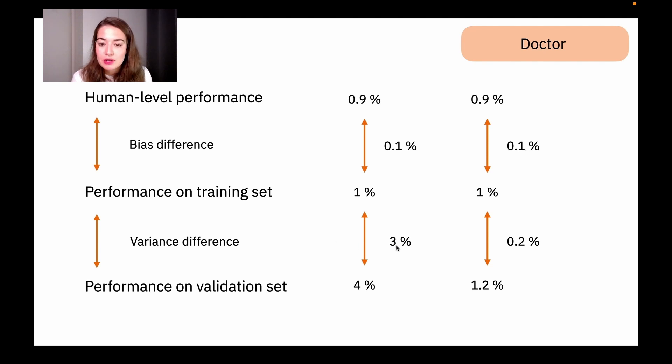Like last time, we again wanted to choose 3. We wanted to lower the variance difference in the first case too. But even for the second case, we see that the variance difference is 2 times the bias difference. So what you want to do is, again, work on the variance difference even in the second case.